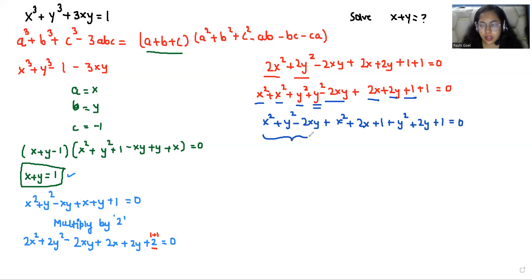Here I can see the formula a² + b² - 2ab, which is (x - y)². We also have (x + 1)² and (y + 1)², all equal to 0. Since these are squares, each value will be greater than or equal to 0.